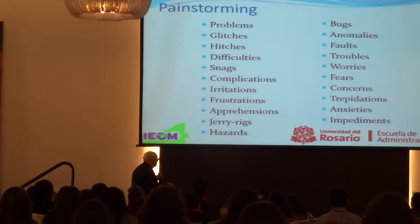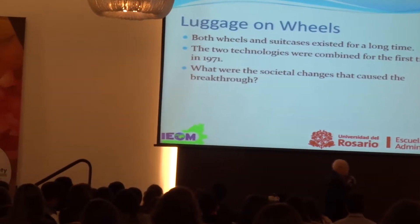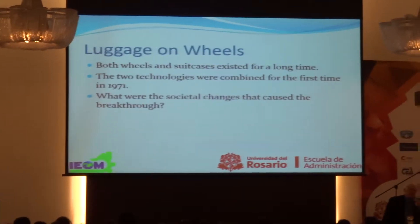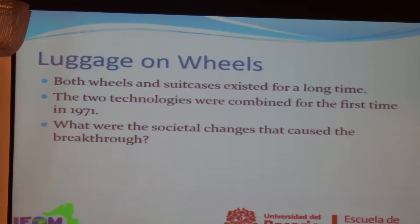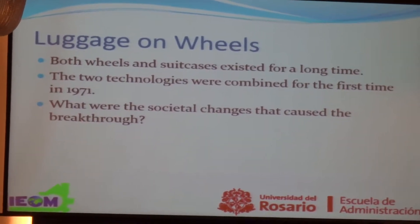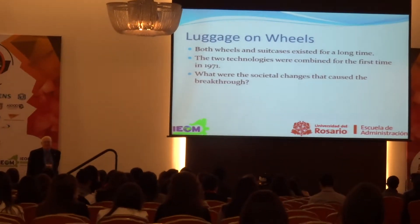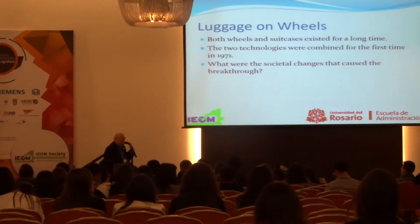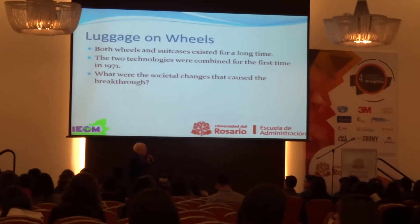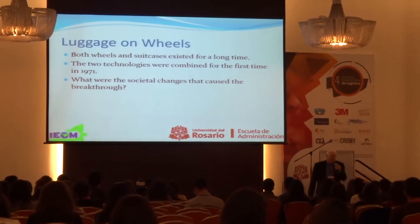I want to talk to you about pain storming through the example of luggage on wheels. How many can remember ever having a piece of luggage without wheels? How did wheels happen to meet luggage? Was it really a unique breakthrough, the two of them coming together? Is that really a highly complex problem? Why did it happen? What societal factors influenced wheels and luggage coming together?